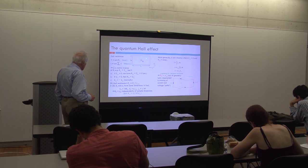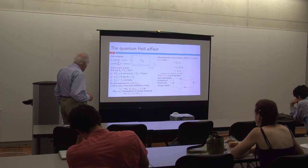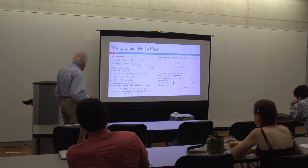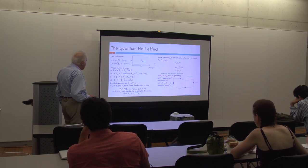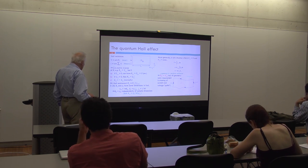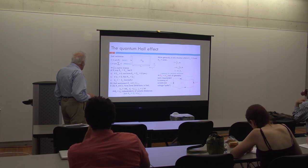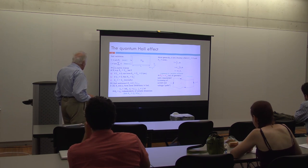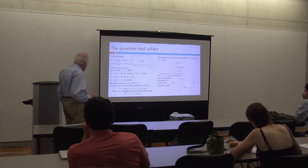So we have this sheet of metal with a width W and a length L, and we can quite generally define resistances and conductances in the following way. We have to be quite careful about this definition.